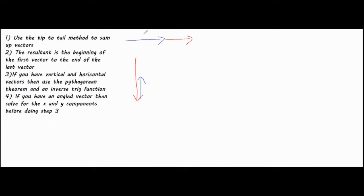Let's say for example we have a vector with a magnitude of four and one of two. To find the resultant vector, we go from the beginning of the first vector to the end of the very last one. This is simple addition: four plus two, and the magnitude of that resultant vector would be six.